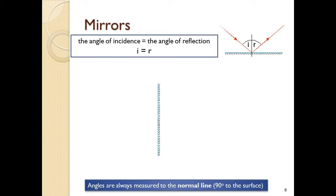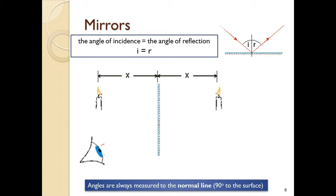You need to be able to construct a diagram to show the location of an image. Here is an object — the image forms the same distance away inside the mirror, equidistant and level with the object. If an observer looks at this object, they see the image inside the mirror. This ray diagram shows how the image forms. Starting from the image position, draw a ray to the mirror that continues to the eye; that ray came from the object and reflects at the mirror surface. A second ray is also drawn, and you can see they are diverging — spreading out.